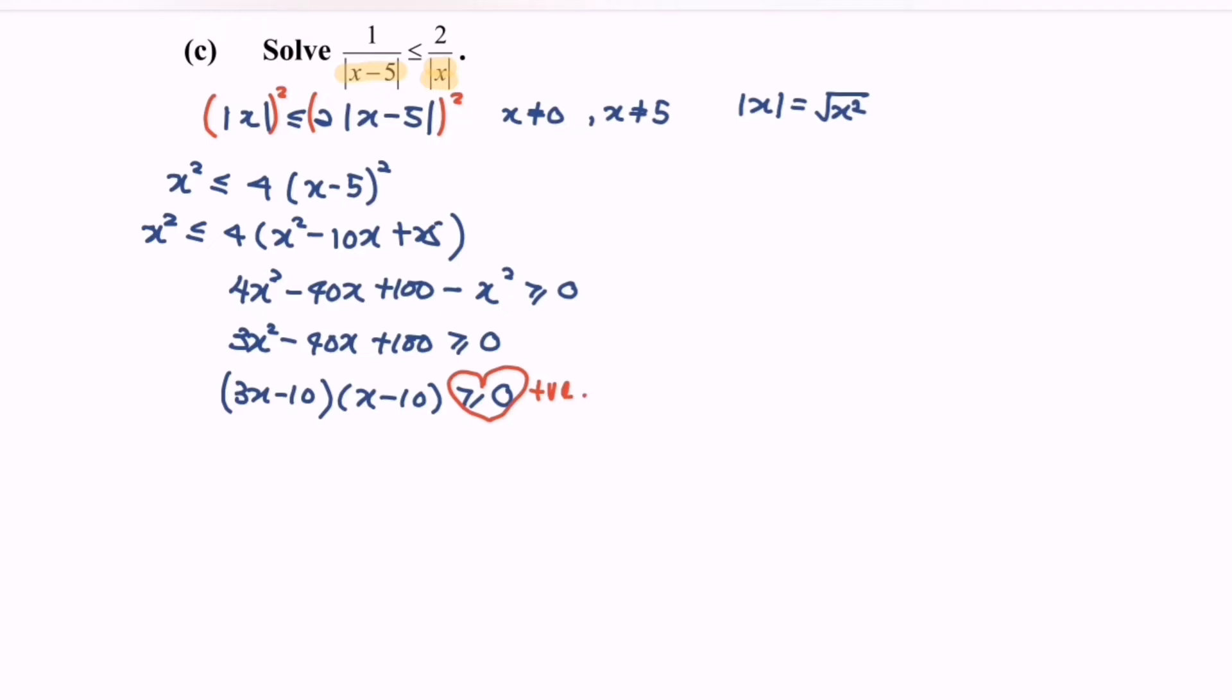Next, we have to split the situation and do remember, always assume positive. So 3x minus 10 greater or equal to 0, so x will be greater or equal to 10 over 3, followed by x greater or equal to 10.